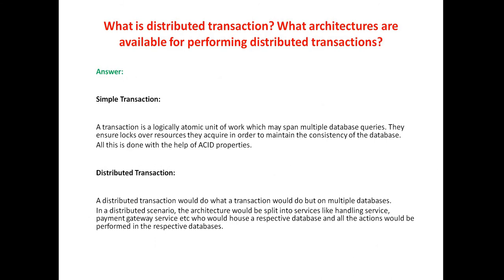The first question was: what is distributed transaction, and what architectures are available for performing distributed transactions? A simple transaction is a logically atomic unit of work which must span multiple database queries. They ensure locks over the resources they acquire in order to maintain the consistency of the database. All this is done with the help of ACID properties. A distributed transaction would do what a transaction would do, but on multiple databases. In a distributed scenario, the architecture would be split into services like a handling service, payment gateway service, etc., each housing a respective database.